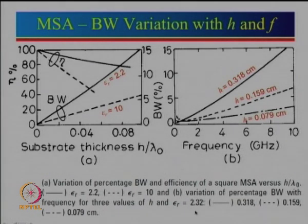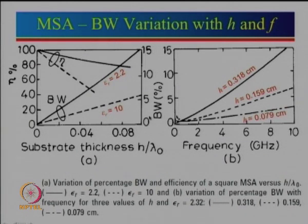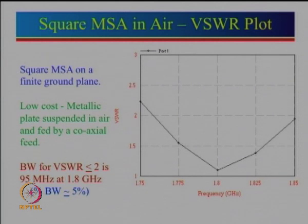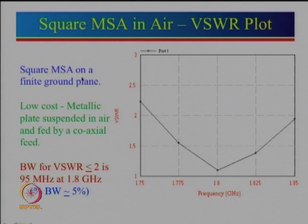Remember, this curve is for epsilon r = 2.32 — if you take epsilon r = 1, the bandwidth will be much more. Based on this information, I strongly encourage that when you need to design an antenna, look at this curve to determine what the substrate parameter should be. The substrate is the good starting point for antenna design. Here we have designed an antenna and given the result — I have not included the length and width; that is an exercise for you to do. What we have done is design a square microstrip antenna in air.